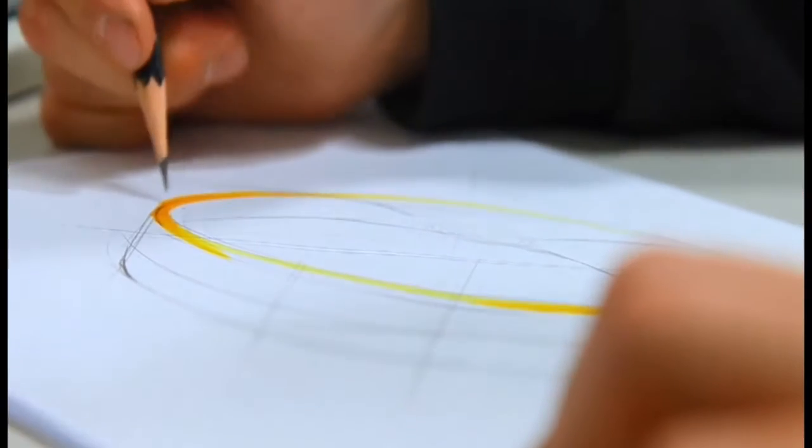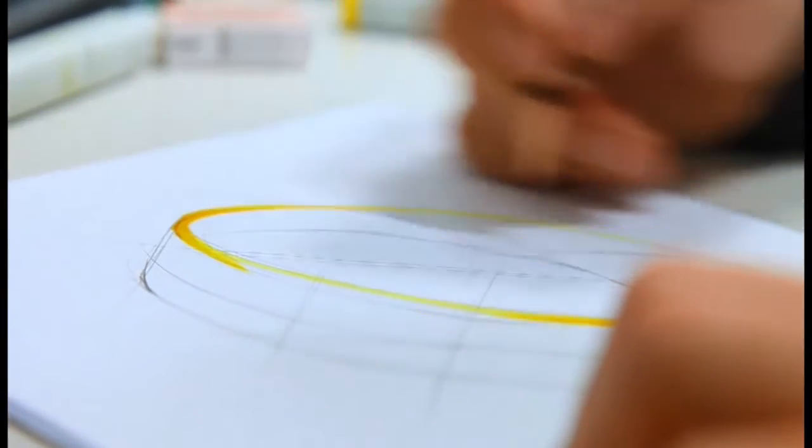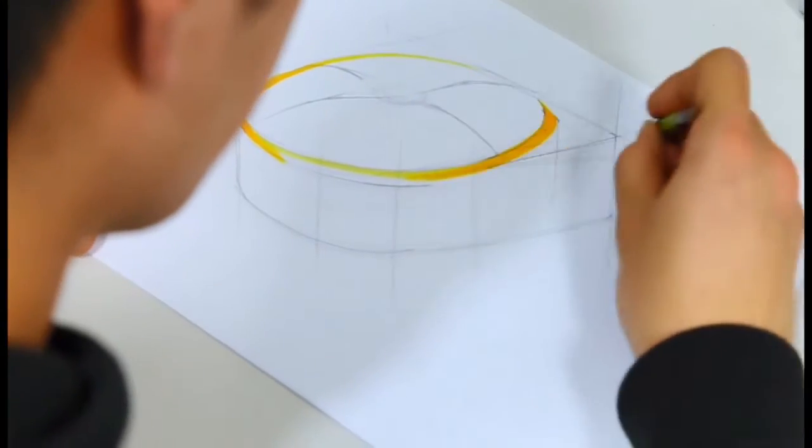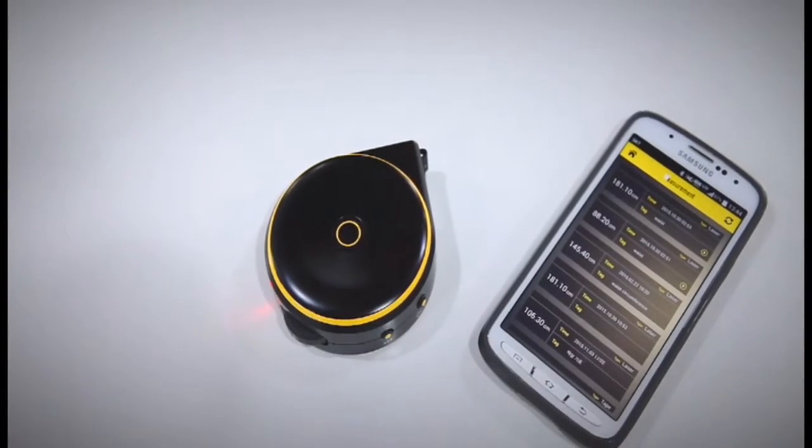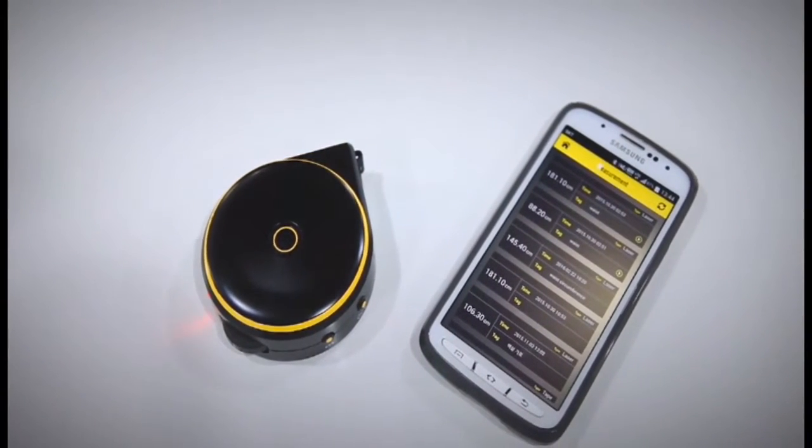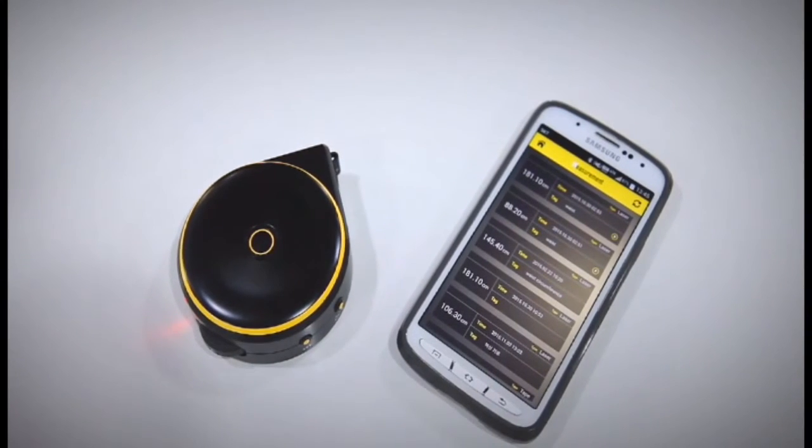Instead, it reinvented the traditional tool as an entirely new smart device that measures distance. The Bagel's smart features are easily accessible. It supports three types of measuring methods.